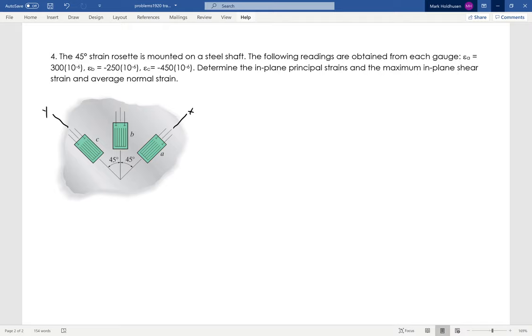When I set it up this way, epsilon x is 300 times 10 to the minus 6. Strain in the y, directly measured, is 450 times 10 to the minus 6.